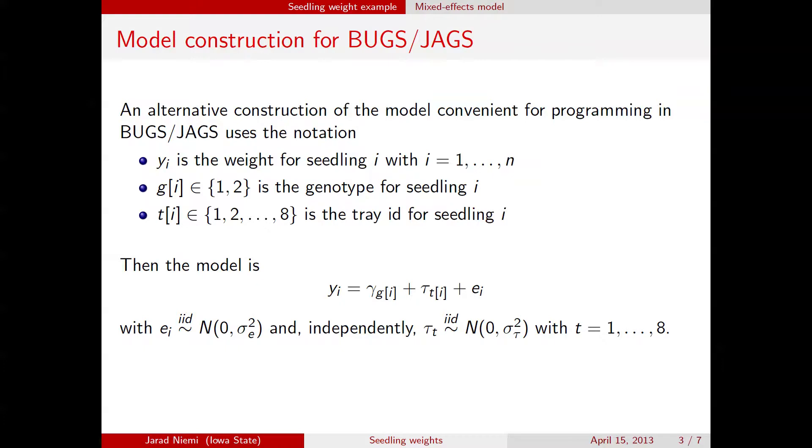Relative to the model that I showed previously, this model here does not have a mu. That mu is just the overall mean, and that actually produced a non-full rank design matrix for the fixed effects, and so just to avoid that difficulty, we've removed mu out of the model. Now we simply have gamma 1 is going to correspond to the mean for genotype 1, and gamma 2 is going to be the mean for genotype 2. So then, the question of interest can be answered by this difference between gamma 1 and gamma 2.